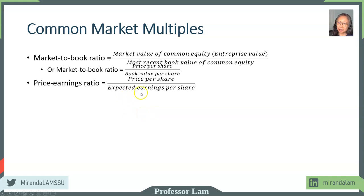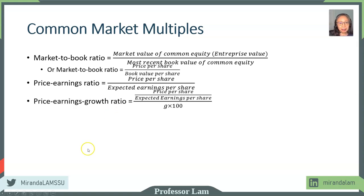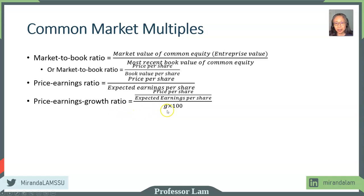Ideally we use expected earnings, but practically oftentimes analysts will use the most recent earnings — we will talk a bit more about the implication of that. Since we know that earnings are not static, meaning earnings are unlikely to stay constant forever, an alternative or supplement ratio is called the price-earnings growth ratio, which takes into account the long-term growth rate. G here is the long-term growth rate of earnings. So it's very similar to the PE ratio, except we take into account future growth potential.